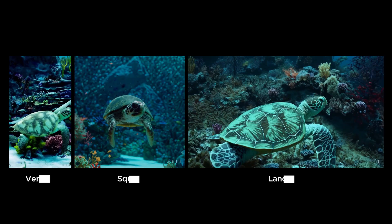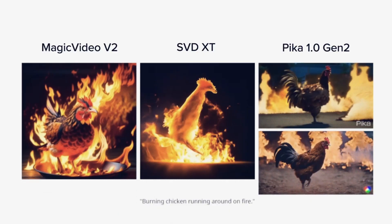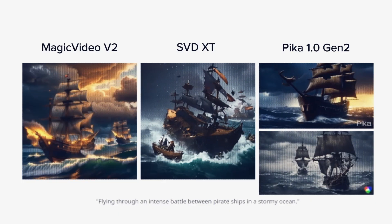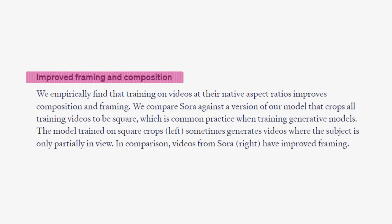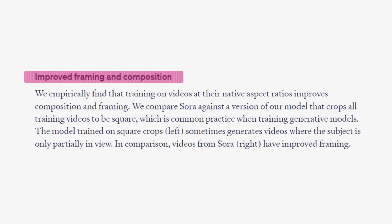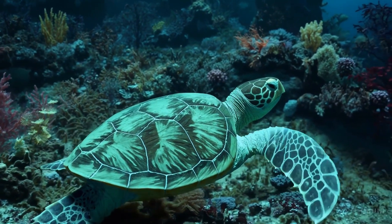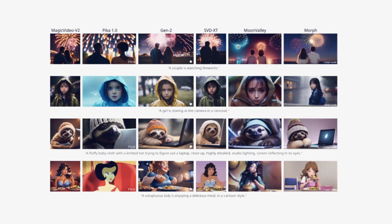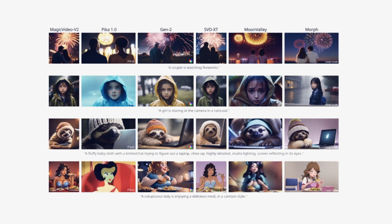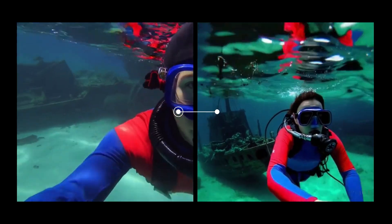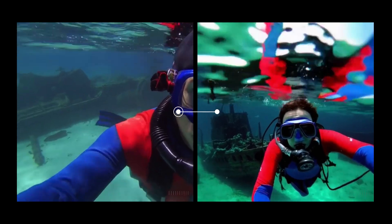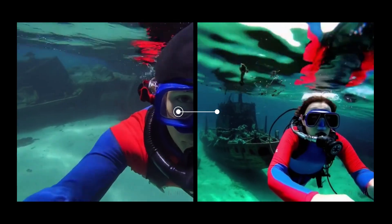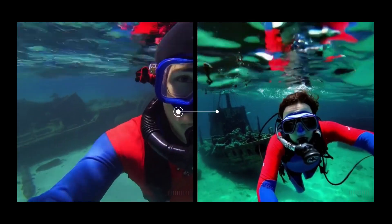What makes this possible is that, unlike a typical AI video model that is trained on a certain resolution, Sora was trained with the videos on their original size. This makes video compositions look much better compared to models trained on square videos. Notice how in the left video the person is placed on the edge of the screen, while in the right video the person is placed in the center, making it more aesthetically pleasing.